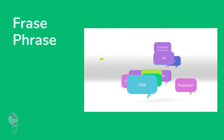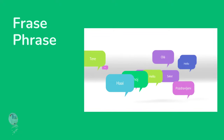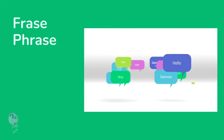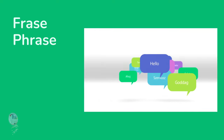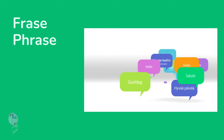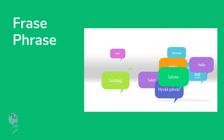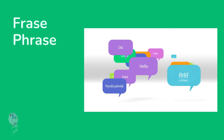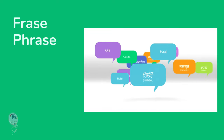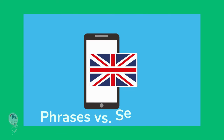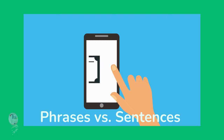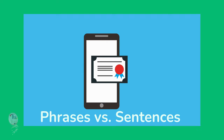In Portuguese, 'frase' encompasses a broader spectrum, including both simple and complex sentence structures. Conversely, 'phrase' in English is more specific, denoting a group of words that doesn't form a complete sentence. Structurally, phrases lack a complete subject-verb arrangement, while sentences possess both.